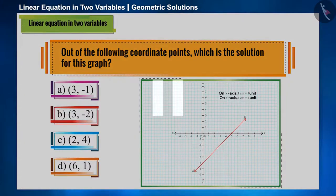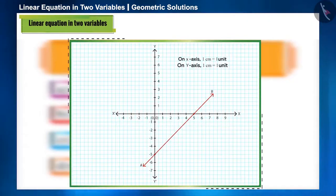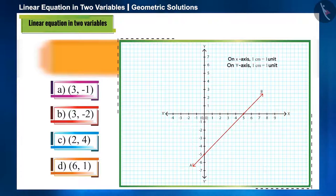As we already know, a line is formed by infinite points and all those points are solutions of that equation. Here we only have to see whether the given points are on this line or not. Let's see.